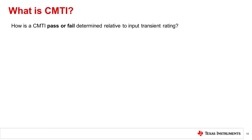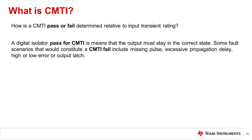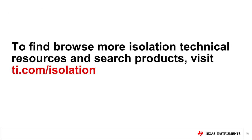How is the CMTI pass or fail determined relative to input transient rating? A digital isolator pass for CMTI means that the output must stay in the correct state. Some false scenarios that would constitute a CMTI fail include missing pulse, excessive propagation delay, high or low error, or an output data latch. This concludes TI's Precision Lab: What is CMTI for Digital Isolators? You can browse more isolation topics at www.ti.com/isolation.